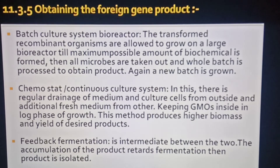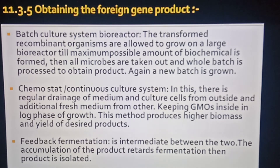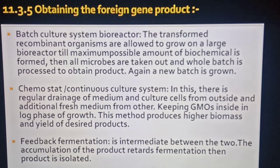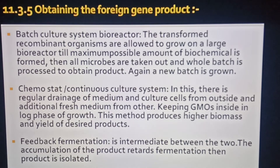Bioreactor के दो प्रकार होते हैं। पहला है batch culture bioreactor, जिसमें transformed recombinant organisms को large mass of nutrient medium में डाला जाता है और एक ही बार में पूरे content से product का batch तैयार होता है। यह batch culture system है। दूसरा प्रकार है chemostat culture या continuous culture — इसके diagrammatic details आपको आपकी slides पर मिल जाएंगे।